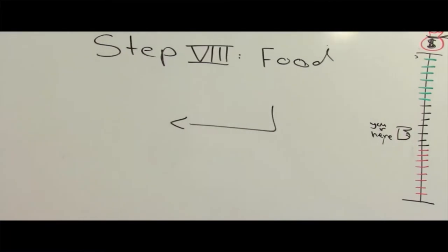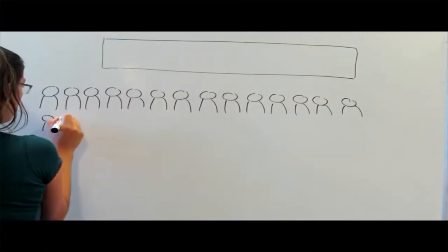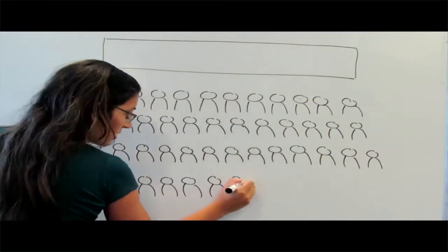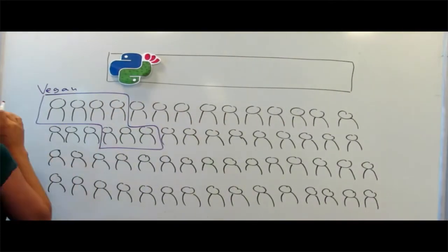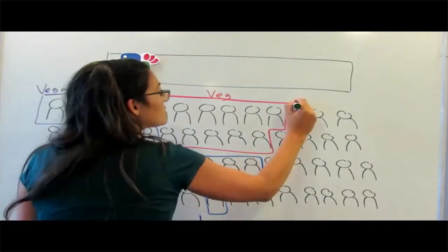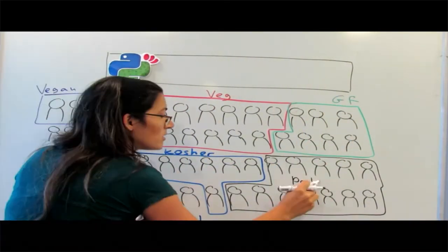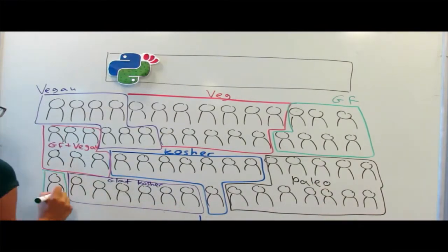Step 8. Food. Food may be challenging. If you consider vegan, vegetarian, gluten-free, kosher, paleo, gluten-free and vegan, black kosher, and of course, fruitarian.